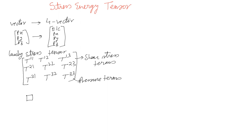If you have some object under pressure or shearing and you define a coordinate system, you can write how a surface or volume element experiences different pressures and shearing stresses — for instance, pressure normal to a plane and shear stress along the x or z direction on that surface. If you do a rotation, these components will mix and give different values; the pressures and shear stresses will change.